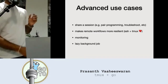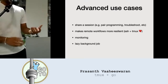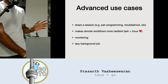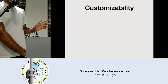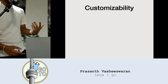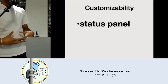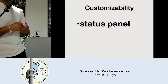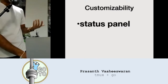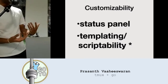So what brings me to the Go part? A lot of this has been about TMUX up to this point. The reason I think Go comes in is there are a lot of ways to customize TMUX. There's a status panel we'll go into where you could customize it. There's also templating and scriptability — more on that later if we have time.